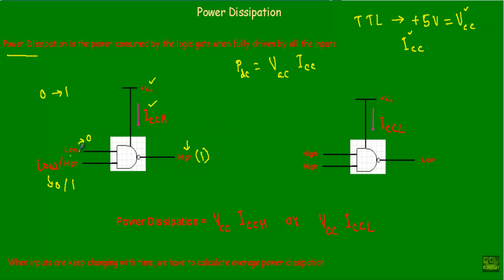But if both inputs are high — that means I am applying logic one at both input terminals of the NAND gate — then our output will be low, or zero. In that case the logic gate draws ICCL amount of current, and therefore our power dissipation will be VCC × ICCL.